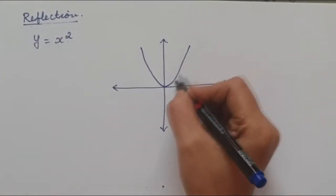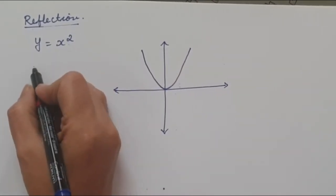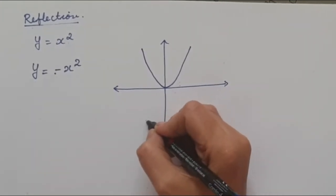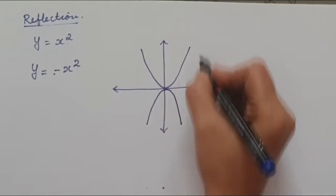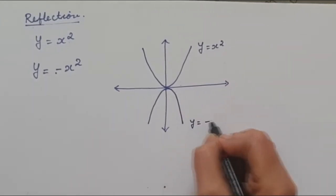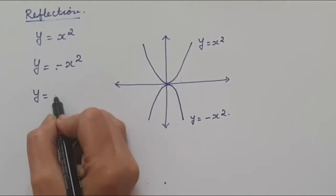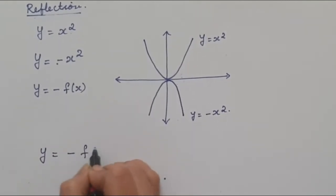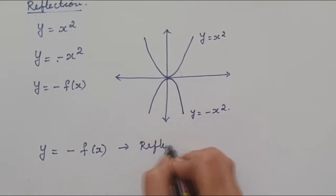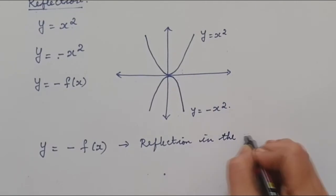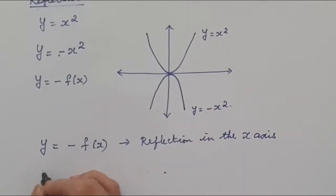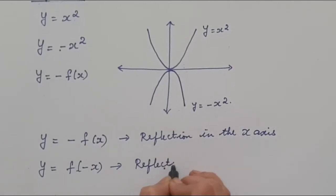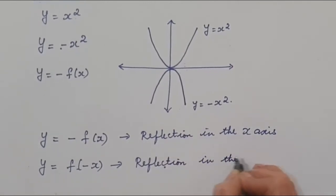Now the last one is reflection. For y = x², suppose we draw the graph of y = -x². When the coefficient of x² is negative, the curve automatically faces downward — an inverted U. So this is y = x² and this will be y = -x². When y = -f(x), this is a reflection in the x-axis. When it is f(-x), inside the bracket, it will be a reflection in the y-axis.